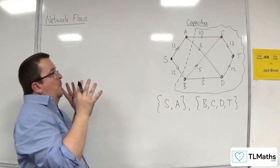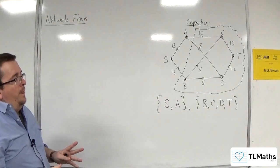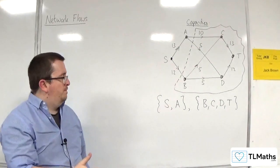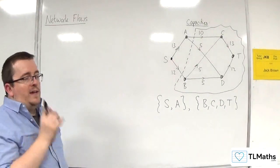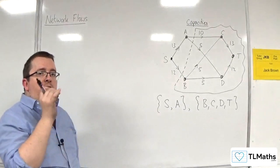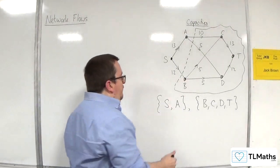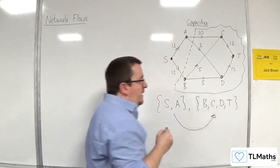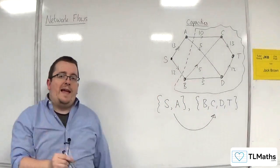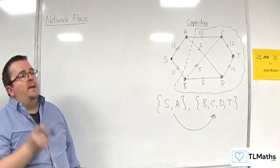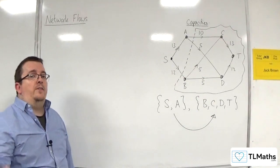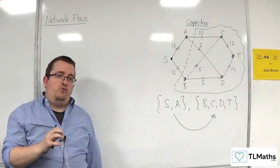So when you are doing this, you are looking at the arcs that you are cutting through, and you count only the capacities that are going from the source set to the sink set. If you've got an arrow that is going from the sink set to the source set, then it contributes zero.